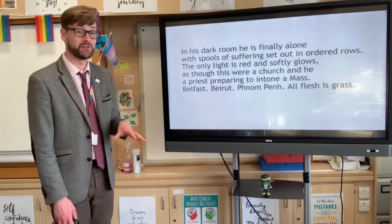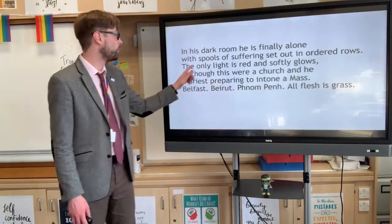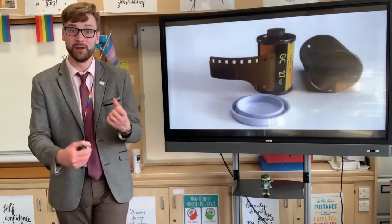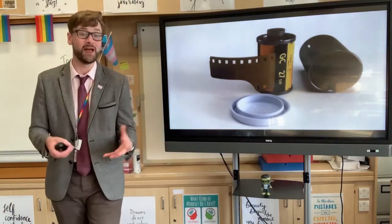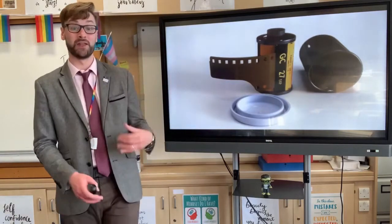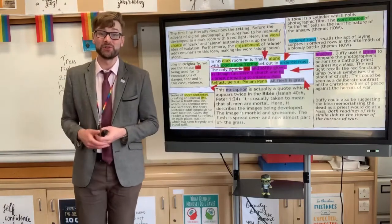Before we jump into our analysis, just a quick bit of help with definitions. If you've never heard of what a spool is before, it's this kind of thing here. A spool is a cylinder which contains photographic film and it would be a common sight in the time that Duffy wrote this in the 1990s, before the advent of digital photography on a mainstream level. So now I'd like to jump into the analysis of the first stanza.